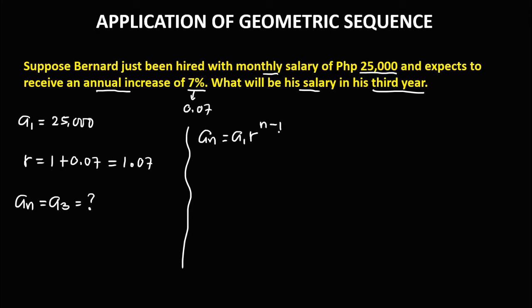To solve for Bernard's salary in his third year, we use the formula: a sub n equals a sub 1 times r to the power n minus 1. Since a sub n equals a sub 3, we have: a sub 3 equals 25,000 times 1.07 to the power of 3 minus 1.